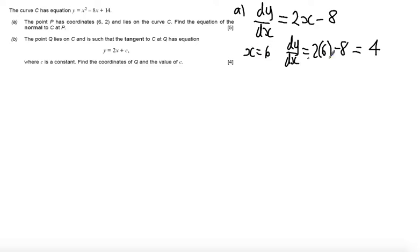Now actually, this is the gradient of the tangent. I want the gradient of the normal. And so I need to use the relationship that the gradient of the normal is equal to minus 1 over the gradient of the tangent, which then gives me a gradient for that normal as minus 1 quarter.